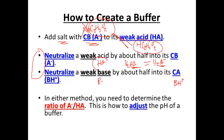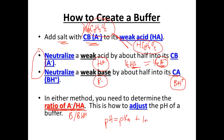Buffers are either a weak acid and its conjugate base in relatively equal amounts, or a weak base and its conjugate acid in equal amounts. In either method, the key is to focus on the ratio of base over acid in Henderson-Hasselbalch: pH equals pKa plus the log of the base component over the acid component. As you manipulate that ratio, you can adjust the pH up and down. That's how buffers are really created — by adjusting the ratio of base over acid.